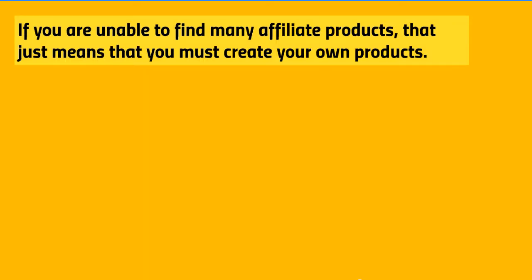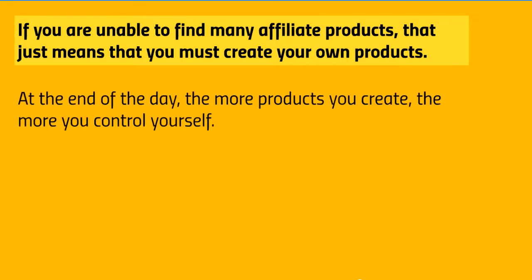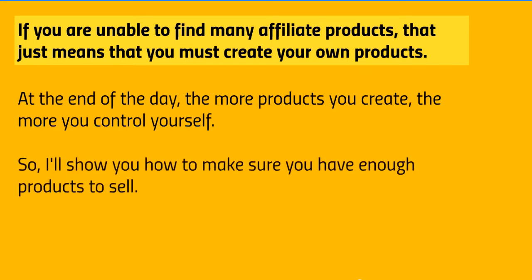Finding affiliate products is great — it allows you to focus on your blog. But if you're unable to find many affiliate products, you'll have to create your own products or find private label rights products. The more products you create, the more you actually control. You own these products, and if you have five different products you can cross-sell them. If somebody buys product one, you can present them with products two, three, four, and five. If they like you and your products, they're more likely to buy the others. That's the beauty of owning your products.